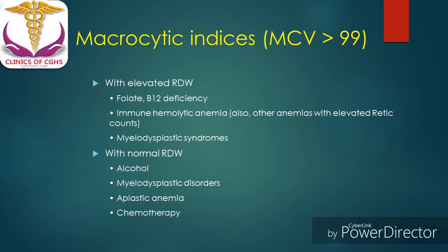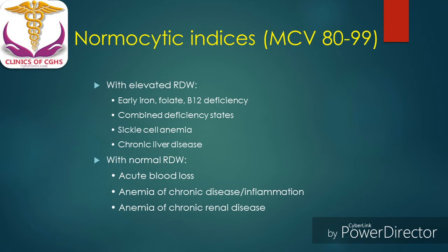When macrocytic indices, that is MCV value, is more than 99, further categorization is possible on the basis of RDW value. With elevated RDW and macrocytic indices, the conditions observed include folate or B12 deficiency, immunohemolytic anemia, or myelodysplastic syndrome. When normal RDW and macrocytic indices are present, it can be observed in alcohol-related diseases, myelodysplastic disorder, aplastic anemia, and chemotherapy.